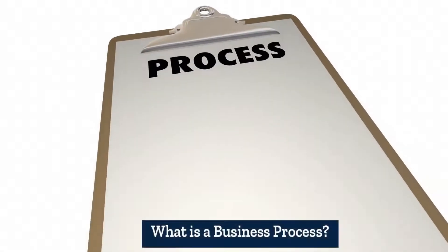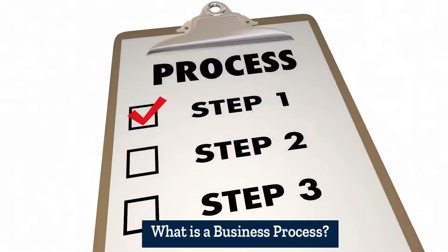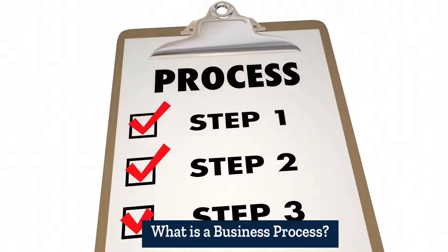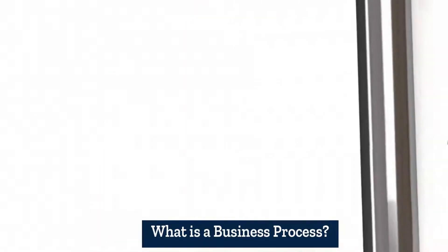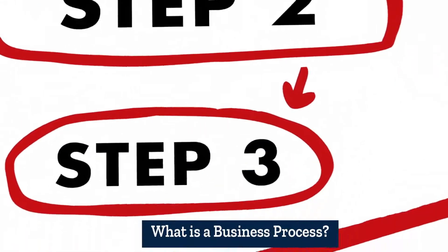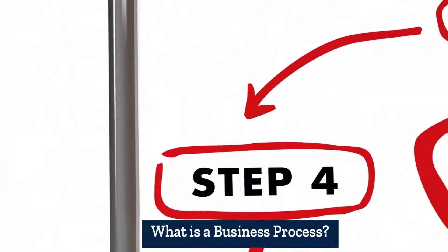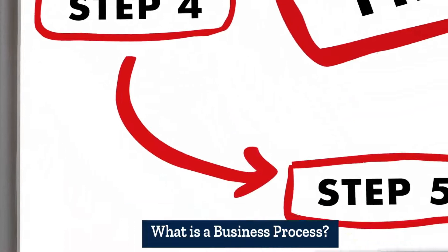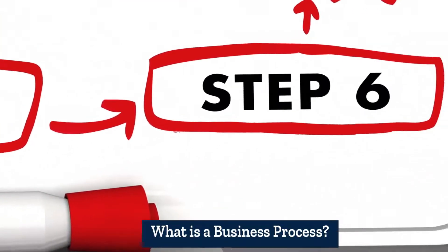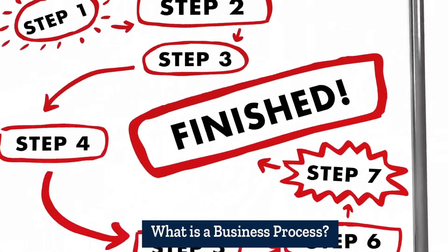A business process entails the necessary steps or activities that need to be executed in a specific order to complete a business operation. It contains the necessary flow of activities from start to finish that enable workers to complete a business task.